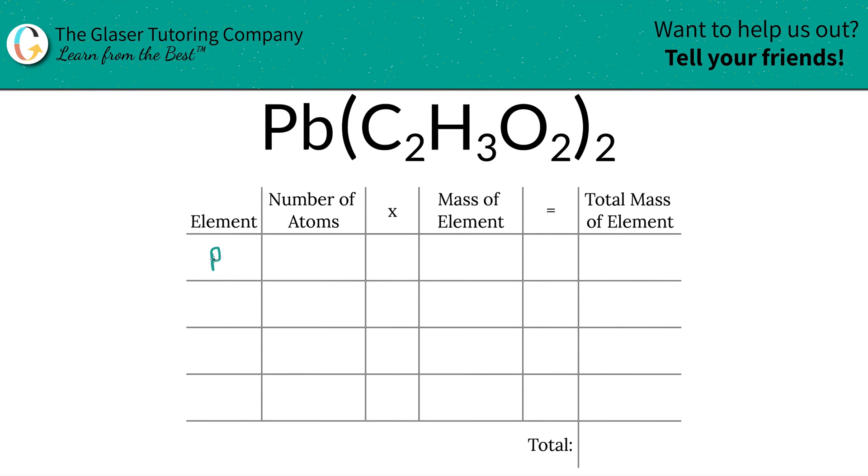So the first step is we're going to write down the elements we see in the compound. So we got lead, we got carbon, we got hydrogen, and we got oxygen.